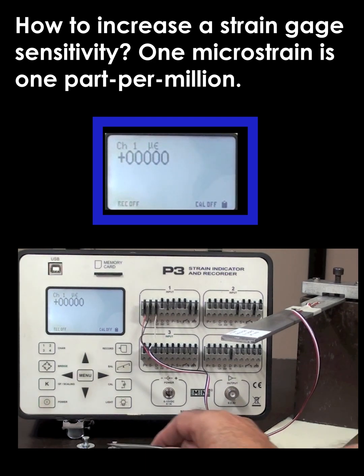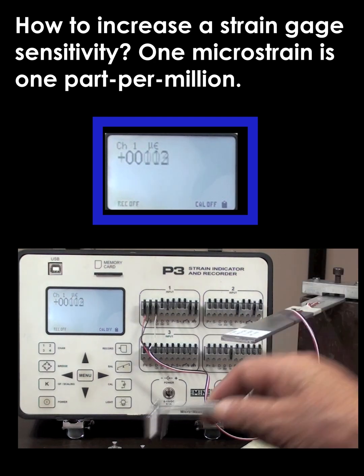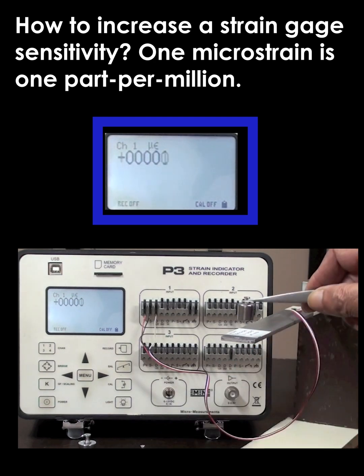Now we put our 20 gram weight on it and we see that we get eleven point zero or eleven point one microstrain. We also see with the 10 gram weight we get about five and a half.